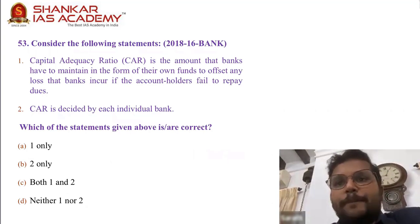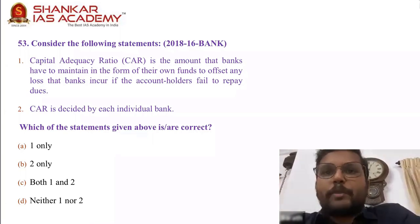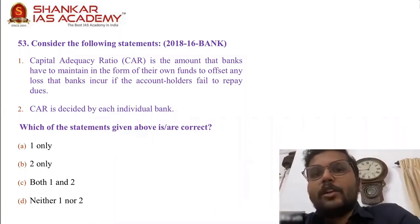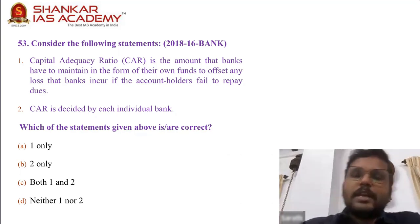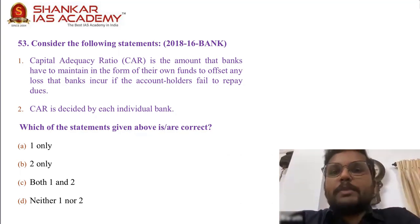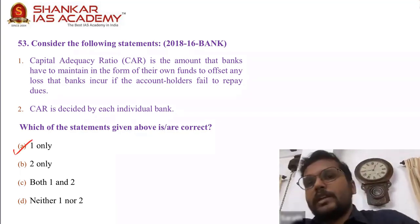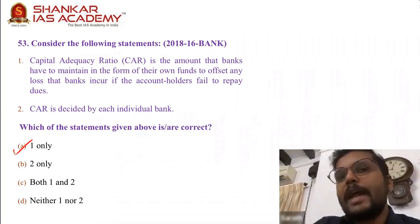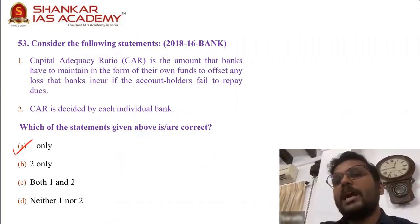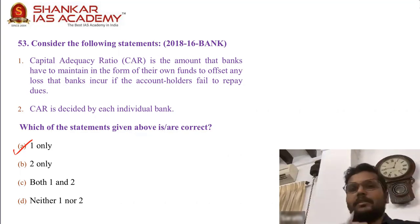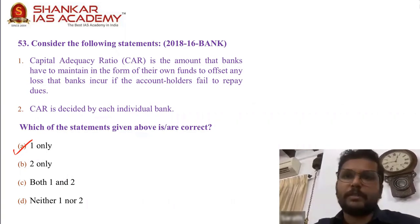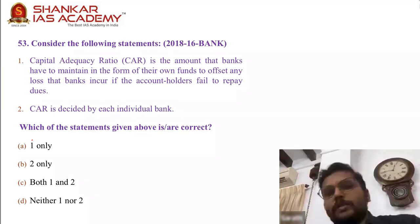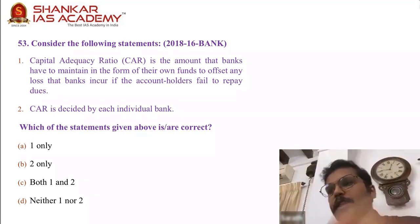Question 53: Capital adequacy ratio. Statement 1 — it is the amount banks have to maintain in the form of their own funds to offset any loss if account holders fail to repay dues. That is the correct definition. Capital adequacy ratio is given to banks by the Reserve Bank of India, not decided by individual banks. Even without knowing that, you can guess statement 1 from the name itself — adequate capital should be maintained to offset losses. Answer is 53, A.